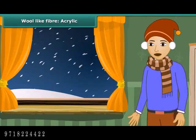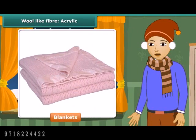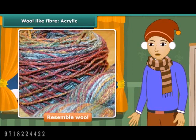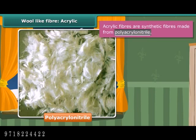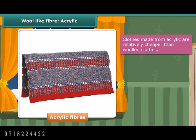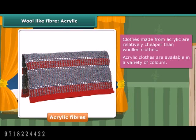To protect us against cold winters we wear sweaters and shawls and use blankets. Many of these are actually not made from natural wool, though they appear to resemble it. These are prepared from acrylic fibers, which are synthetic fibers made from polyacrylonitrile. Acrylic is lightweight, soft, and warm with a wool-like feel. Wool from natural resources is quite expensive, whereas clothes made from acrylic are relatively cheaper and available in a variety of colors. The disadvantages are that acrylic tends to fuzz easily and does not insulate the wearer as well as wool or cashmere.